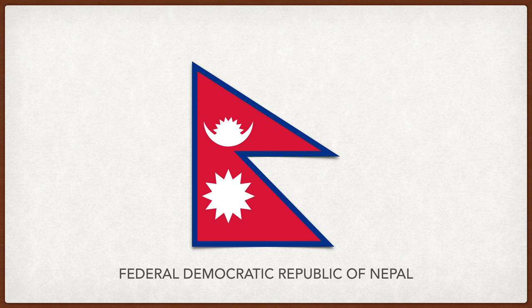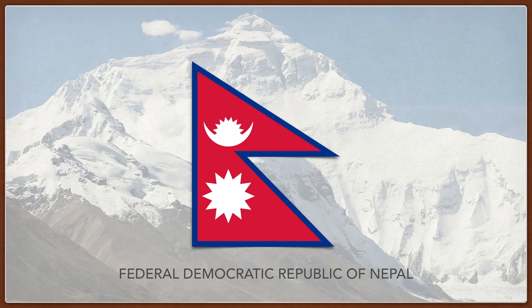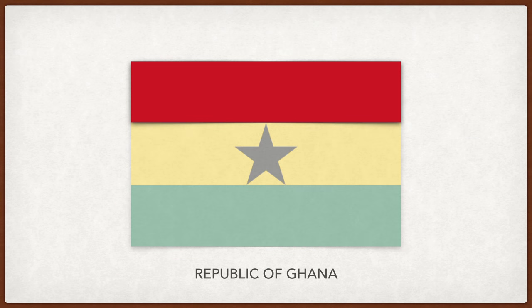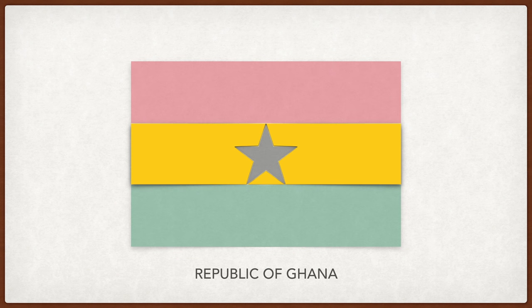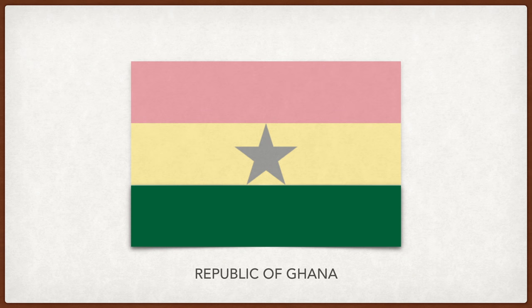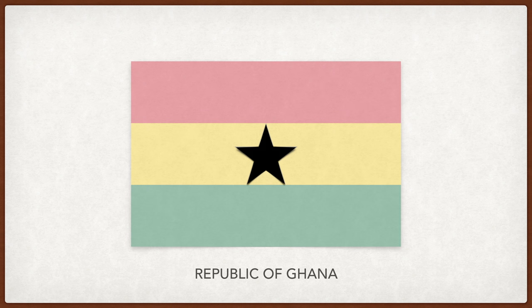Nepal. The only national flag that isn't four-sided. The blue symbolizes peace and harmony, the red is Nepal's national color and represents the bravery of the people. The two triangles symbolize the Himalaya mountains. The sun and moon represent permanence — the hope that Nepal will last as long as the sun and moon. Ghana. The red represents the blood of those who died for independence from the United Kingdom. The gold represents mineral wealth, the green is for the rich forest and natural resources, and the black star is the symbol of African emancipation.